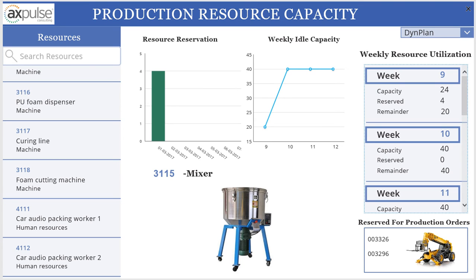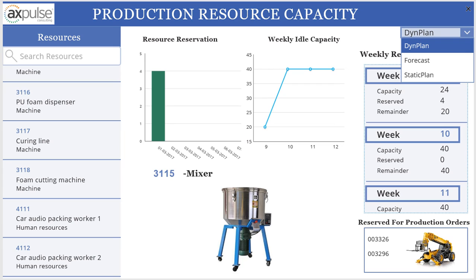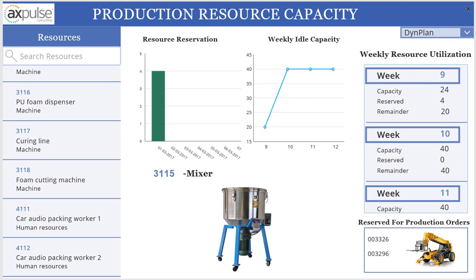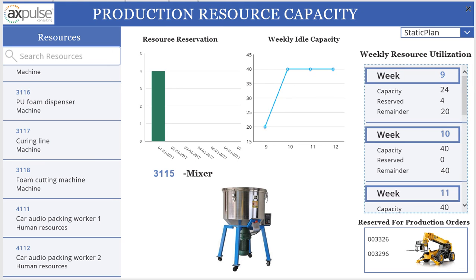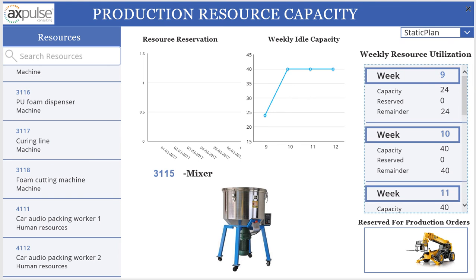You also have the provision to select plans, just like when you select different plans from the capacity load inquiry in the Microsoft Dynamics AX rich client. Similarly, you have this dropdown and you can select different plans. Right now we are looking at the data for the dynamic plan, but if I select a different plan like the static plan, the app will refresh and show the data accordingly.